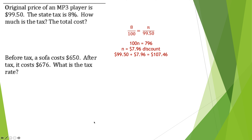The state tax is 8%, so 8 goes in the percent place. Is 99.50 the whole cost of the MP3 player or part of the cost? Clearly it's the whole cost, so 99.50 goes in the bottom. Cross multiplying gives 100n equals 796, so dividing by 100 gives n equals seven dollars and 96 cents. That's the tax — not a discount. Adding the tax back: 99.50 plus 7.96 equals 107.46 total cost.